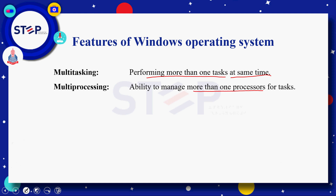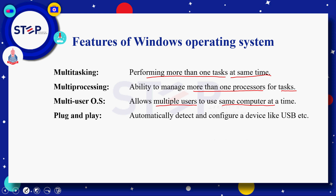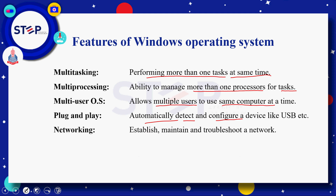Multiprocessing — ability to manage more than one processes for a task is called multiprocessing، اور اس میں ضروری ہے کہ tasks independent ہوں۔ Multi-user OS — یہ operating system کی وہ capability ہے جس کے through multiple users at the same time آپ کے computer کو use کر سکتے ہیں۔ Plug and play — آج کل کے latest operating systems میں plug and play کی facility ہے جس کے through operating system automatically آپ کے different devices کو detect اور configure کر کے play کرنے کے قابل بنا دیتا ہے، جیسے USB۔